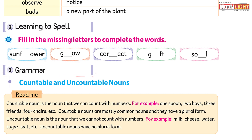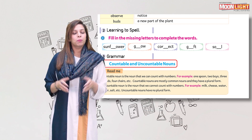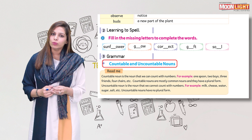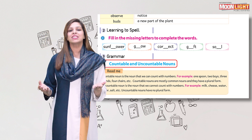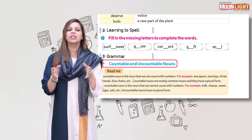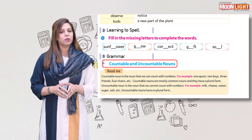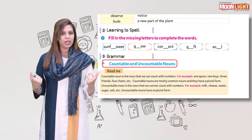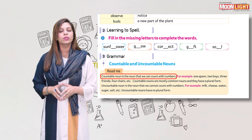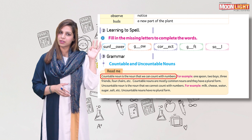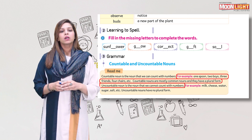This time we'll be talking about countable and uncountable nouns. But before that we should know what a noun is. Noun is a naming word — it is the name of a person, place, thing, or animal. Countable nouns are nouns that can be counted in numbers, like one spoon, two children, five birds.